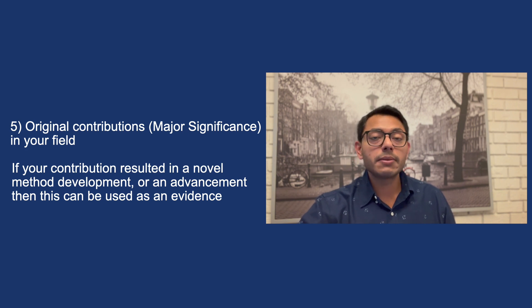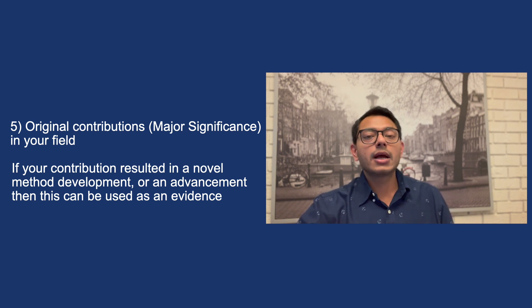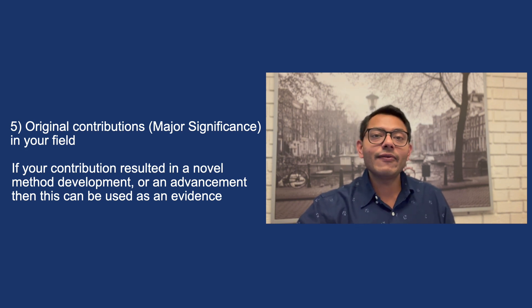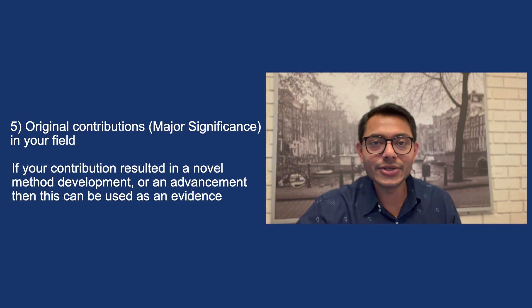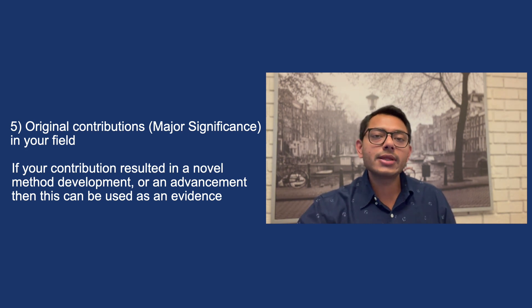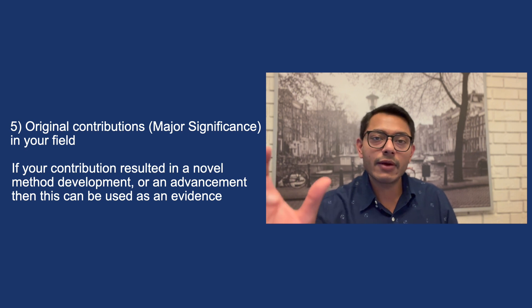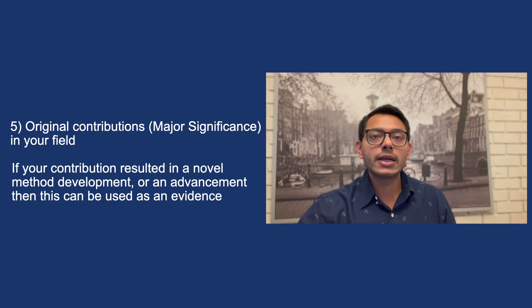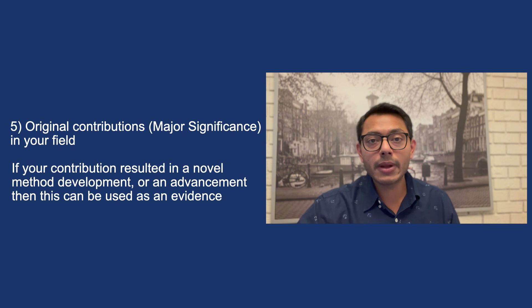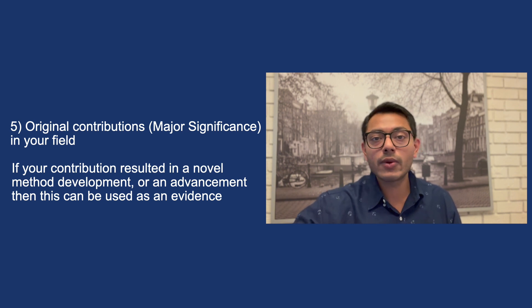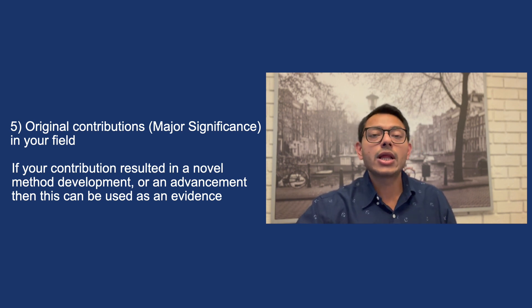The fifth criteria is evidence of original contributions of major significance in your field. The word 'field' is very important here — in my case it's computational biology or bioinformatics; in your case it could be computer science or electrical engineering. The evidence you show should clearly showcase that your work has been of major significance in your field, such as leading to a scientific or technical advancement, or a patent you filed that represents a novel development in the field.